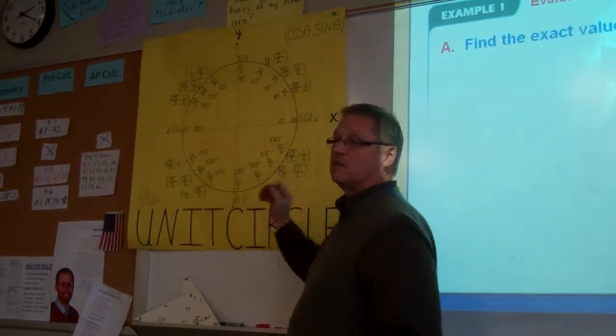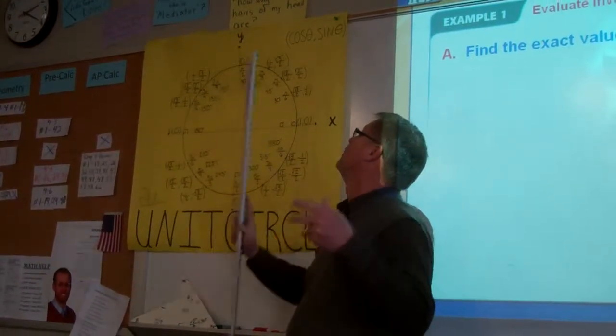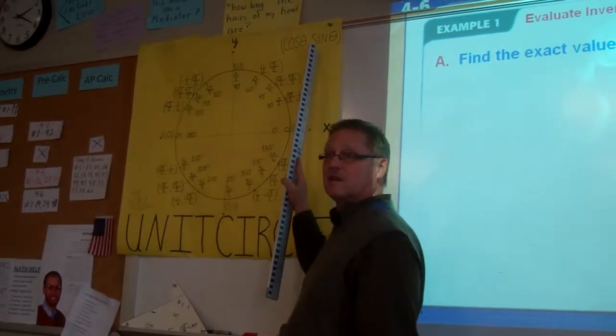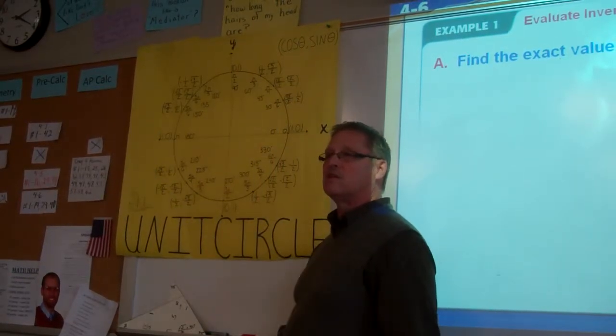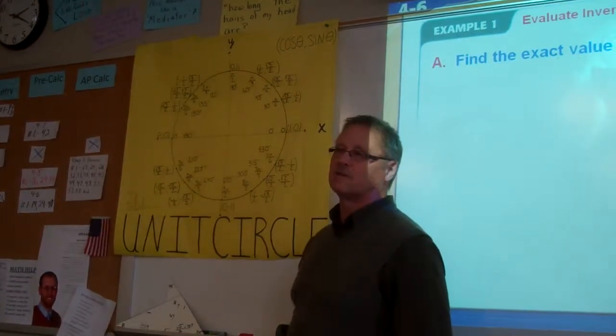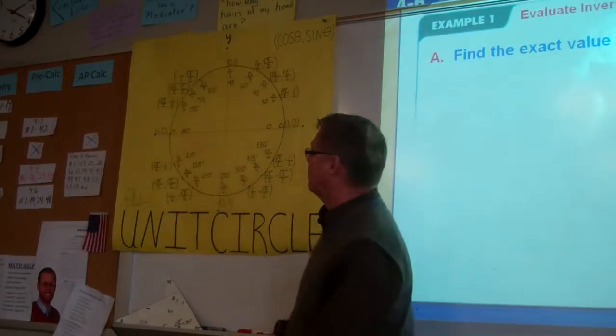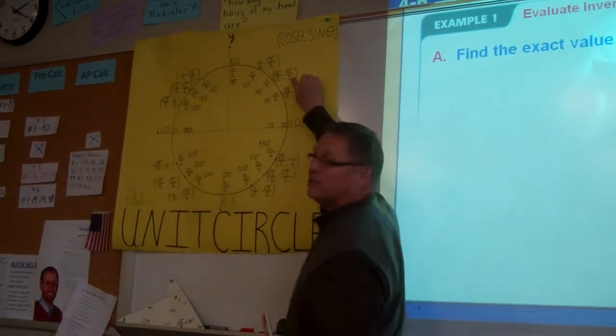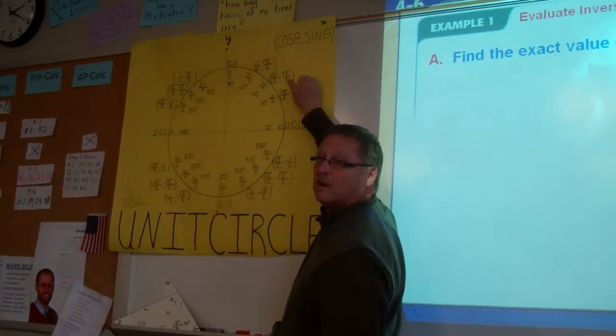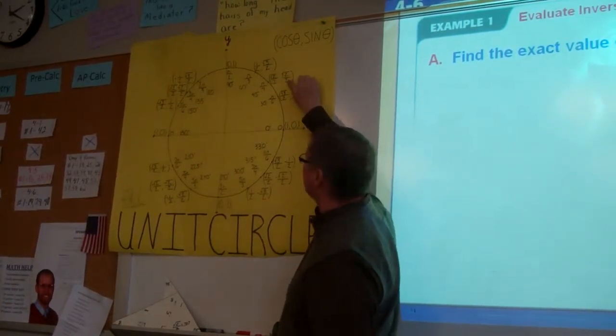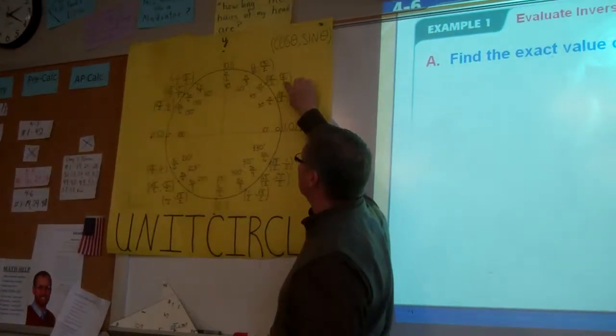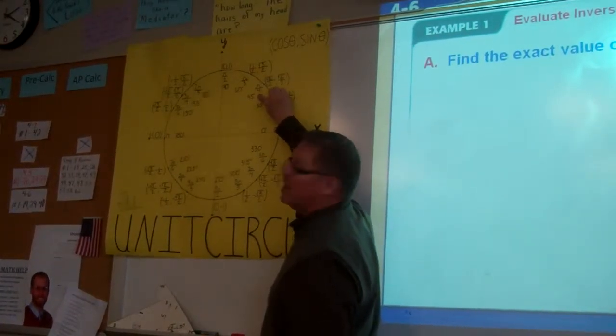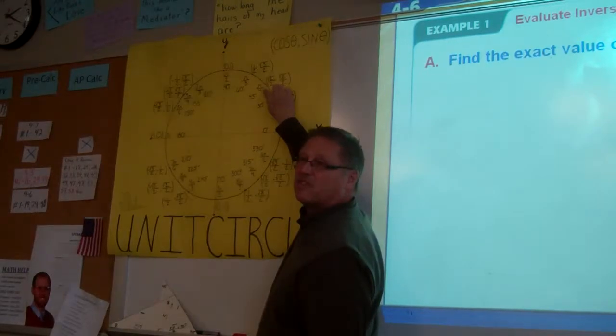Remember on the unit circle, sine are heights. So we're trying to find the angle whose height is square root of 2 over 2. Well, on the circle, that happens like right here, doesn't it? I'm pointing to a spot that has a height of square root of 2 over 2. It looks like that's 45 degrees or pi fourths.